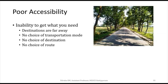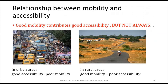So mobility is the easiness to move — the facility which gives us the ability to move — whereas accessibility is the easiness to reach our destination. If we provide good mobility, it may contribute to good accessibility too, but not always.